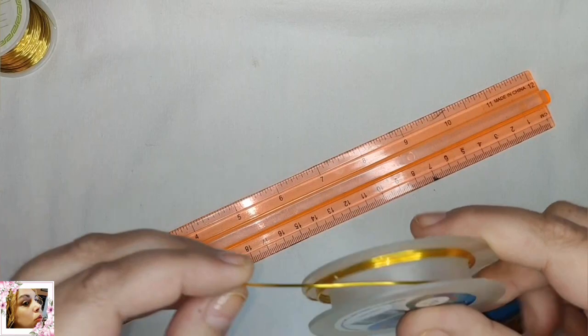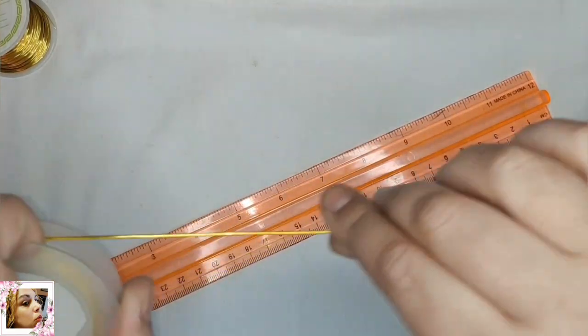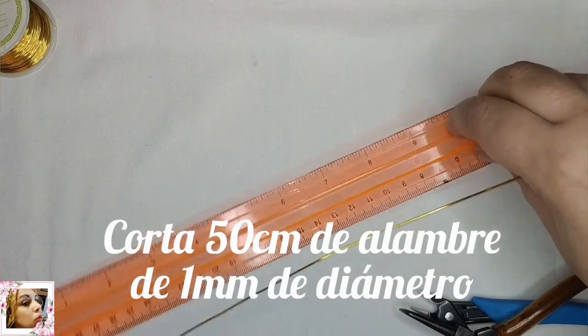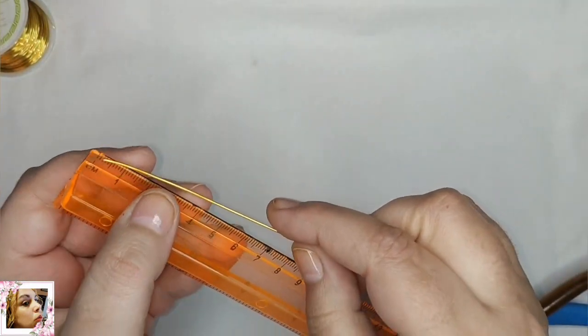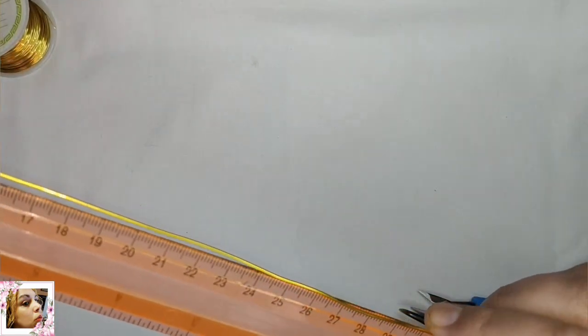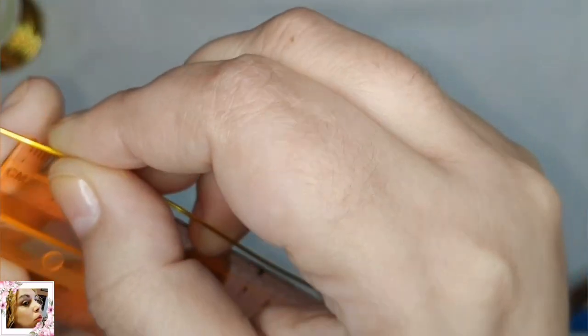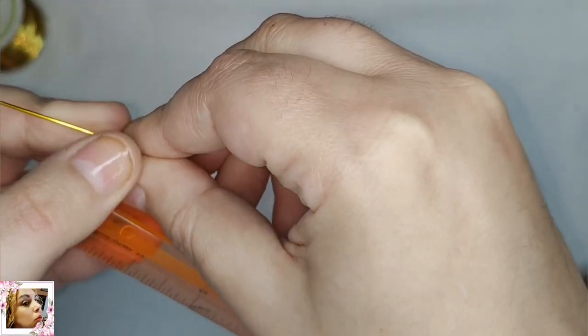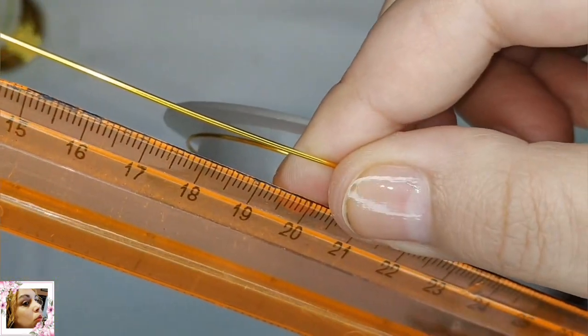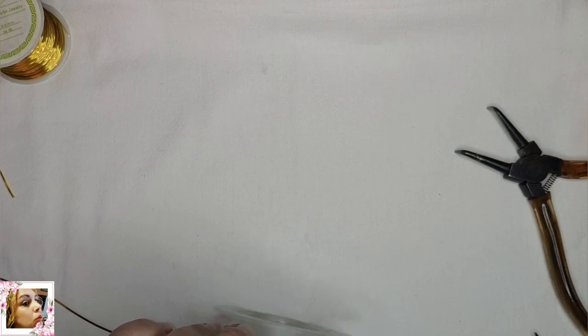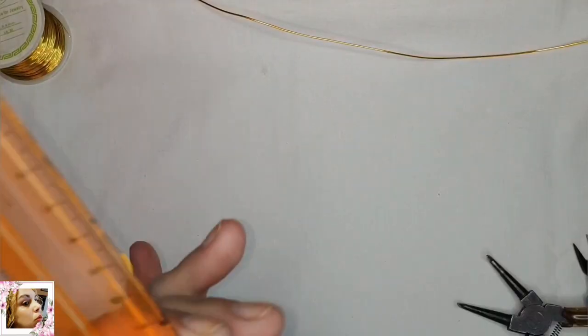En primer lugar vamos a cortar del alambre de 1 mm, 50 cm aproximadamente, depende de la talla de la pulsera que usted quiera realizar. Aquí tiene 30 la métrica, pues le sumamos 20 más y ya son los 50.